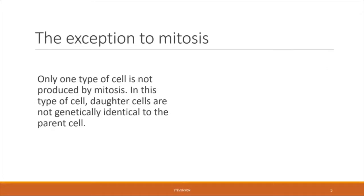There is one type of cell that is produced not through mitosis, because the daughter cells are not actually identical copies of the parent cell. Based on the title of this chapter, the type of cell we're talking about here are the sperm and the egg, also known together as the gametes.